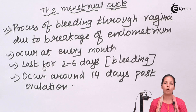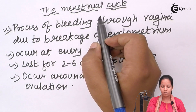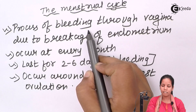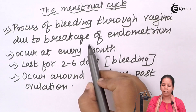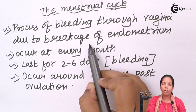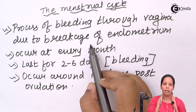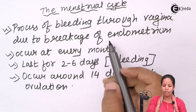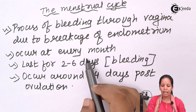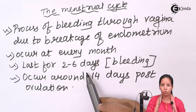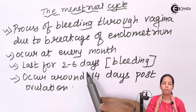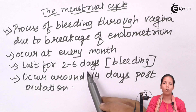There is no availability of male gametophyte, so the menstrual cycle is the process of bleeding in females through the vagina due to the breakage of the endometrium wall. Once the endometrium wall is broken down, the next month it will be rebuilt within the span of 28 days. The menstrual cycle occurs every month and lasts approximately two to six days, involving the shedding of the ovum that was not fertilized.